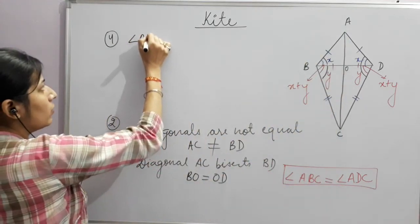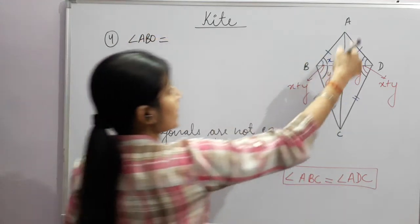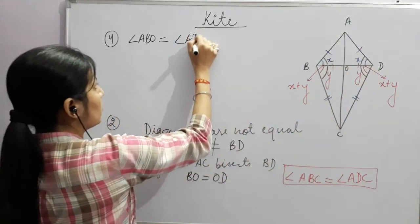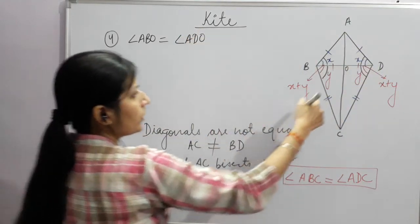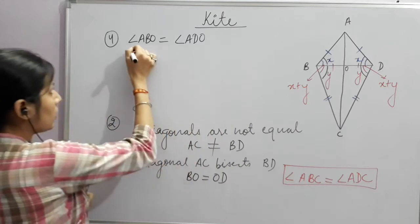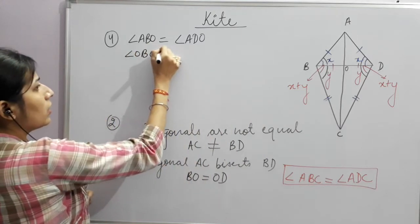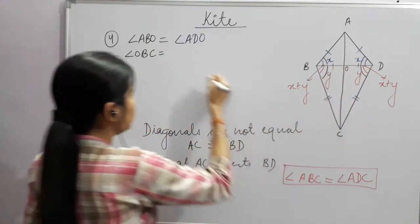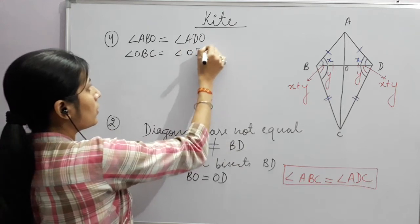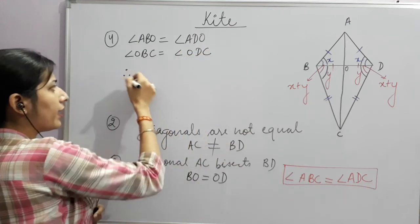Angle ABO = angle ADO, and angle OBC = angle ODC. Adding these two results, it implies that angle ABC = angle ADC. This is the result we get for the kite.